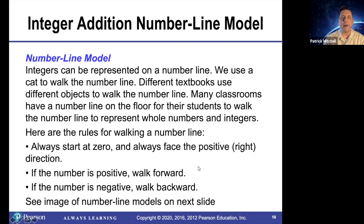The number line model. Integers can be represented on a number line. We use a cat to walk the number line. Different textbooks use different objects to walk the number line. Many classrooms have a number line on the floor for students to walk to represent whole numbers and integers. Here are the rules: always start at zero and always face the positive direction. If the number is positive, walk forward. If the number is negative, walk backward.